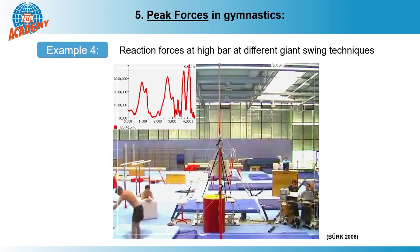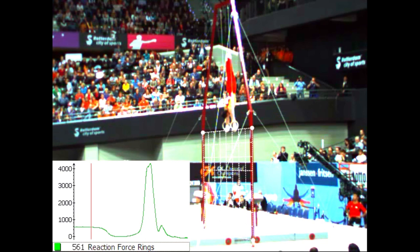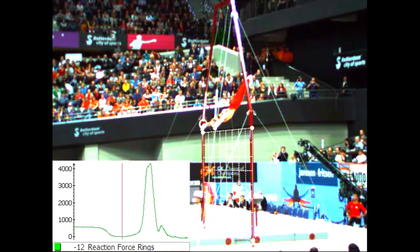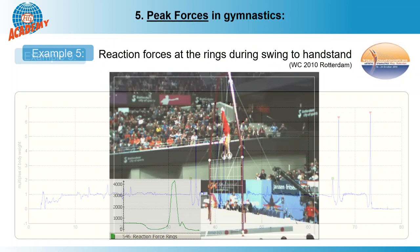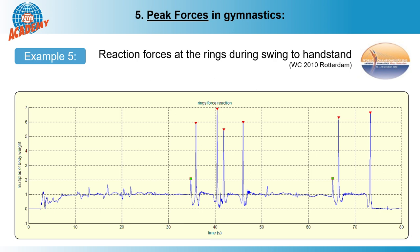Even higher peaks can be reached by gymnasts at the rings. Although all well-known equipment manufacturers now use damping elements in the ring suspension, this light Chinese gymnast reached a value of 4320 Newtons during this swing to handstand — this was 6.8g for him. At the 2010 World Championships in Rotterdam, we measured almost all of the complete exercises on the rings — a total of 238 exercises. On average, peaks above 5g appear more than 7 times per exercise. The highest peak force registered was 10g.